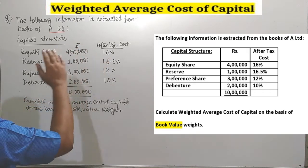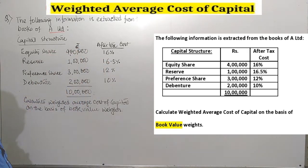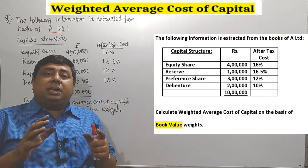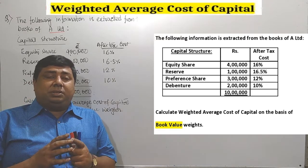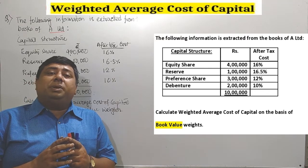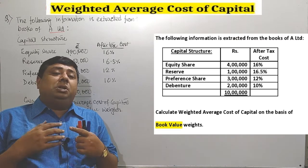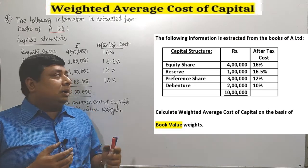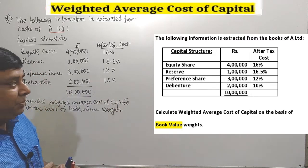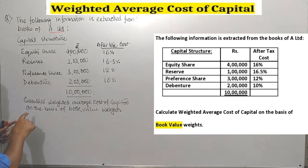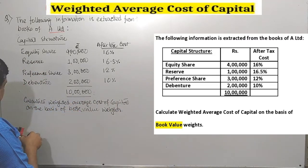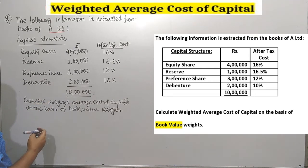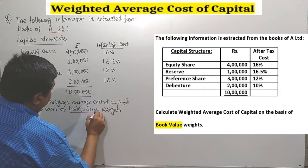Specific costs are also available. For maintaining such types of capital, what annual charges the company needs to incur — what annual cost the company needs to pay — those costs are also mentioned. Next, we are asked to calculate the weighted average cost of capital, and we are going to show that on the basis of the book value method.